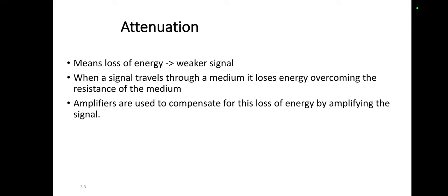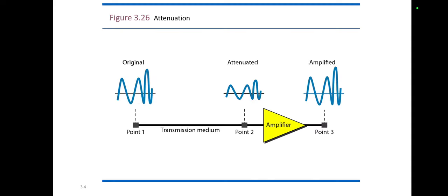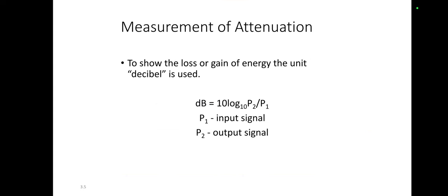To overcome or compensate for this loss of energy, we use an amplifier, and after amplifying the signal, that signal is sent to the destination node. In this figure, the original signal travels through the transmission media and gets attenuated — it becomes a weaker signal. An amplifier is used in between to compensate for this loss of energy, producing the amplified signal.